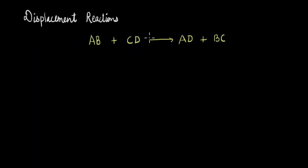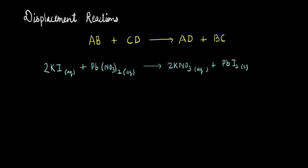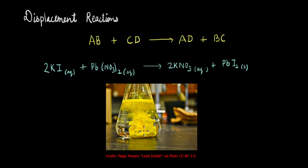So double displacement reactions look something like this, where if we have AB and CD as the reactants, D replaces B to form AD and C replaces A to form BC. So let's go through an example of such a reaction. In this reaction, we have potassium iodide reacting with lead nitrate to form potassium nitrate. And this lead iodide is formed as a precipitate. And this lead iodide precipitate has a bright yellow color like this. So this is one of the identifications of double displacement reactions, because these reactions typically lead to precipitation.